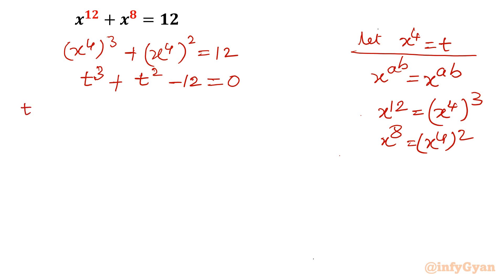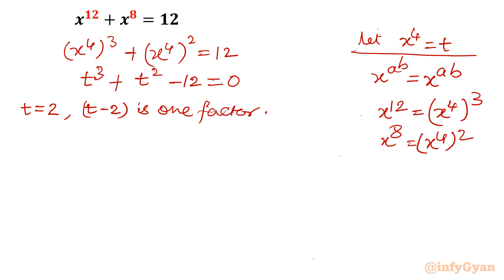If I put t = 1: 1 + 1 - 12, no solution. If I put t = 2: 2^3 is 8, 2^2 is 4, 8 + 4 = 12, so yes, there is a solution. So t = 2 is one solution. This is a trial method for cubic or higher-degree polynomials. To apply the Remainder theorem or synthetic division, you must find one solution first. Here that is t = 2, so t - 2 is one factor.